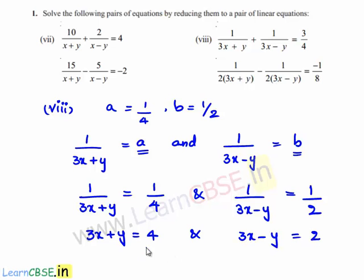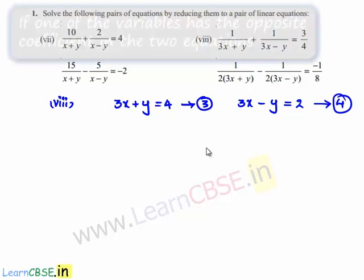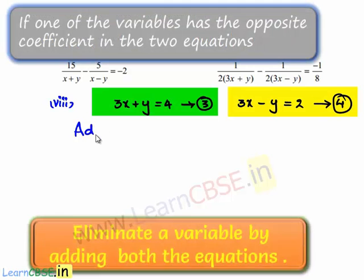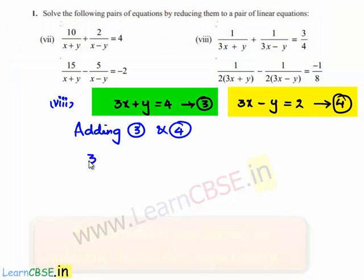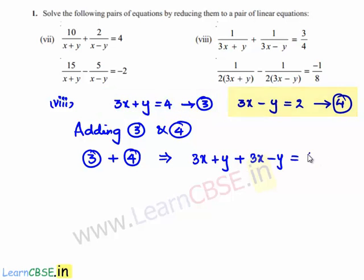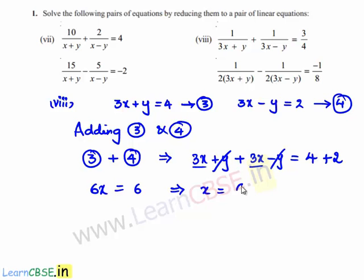Name these as equation 3 and equation 4. Adding equations 3 and 4: (3x + y) + (3x - y) = 4 + 2. The y terms cancel, giving 6x = 6, which implies x = 1.